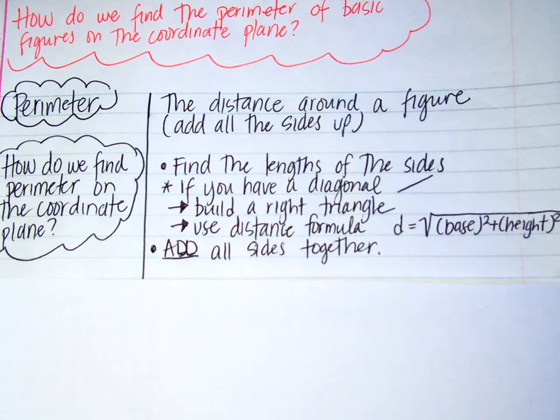Today we're going to be finding the perimeter of basic figures on the coordinate plane. What I mean by basic figures, we're going to be talking about triangles, rectangles, and squares. So to find the perimeter, that's pretty much just finding the distance around a figure. So we're going to be adding all of the sides up of a triangle.